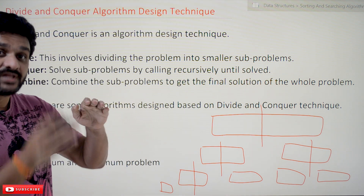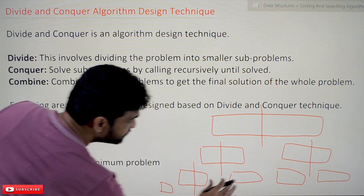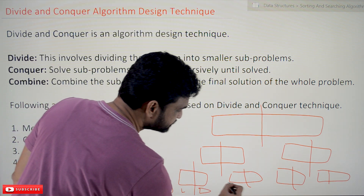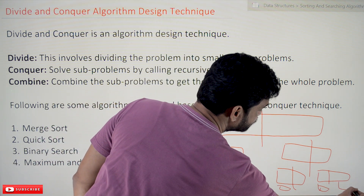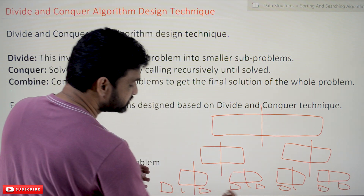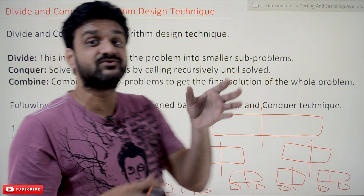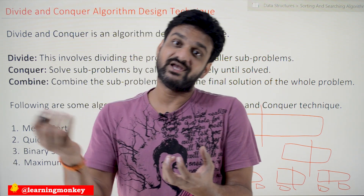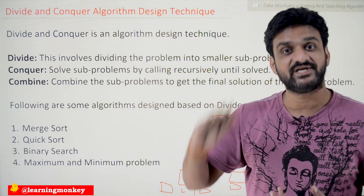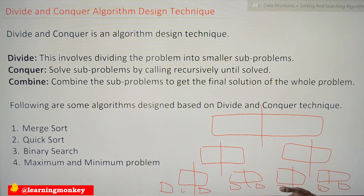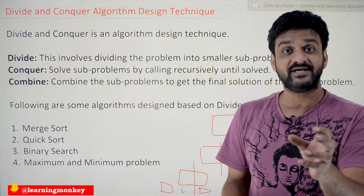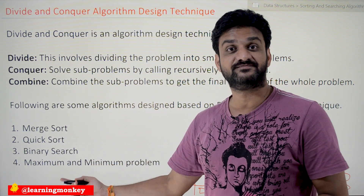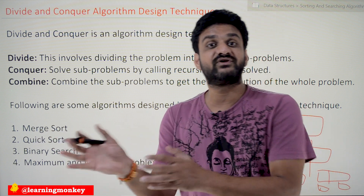The problem gets divided down to a certain limit where it can no longer be subdivided. Next, these sub-problems — the smallest possible problems — get solved. We find the solution for each smallest problem, and after finding those solutions we combine them. That combination is done using recursion, so you should be well-versed with the concept of recursion. This is how divide and conquer works, and this visualization should stay in your mind as it helps understand how solutions are obtained.